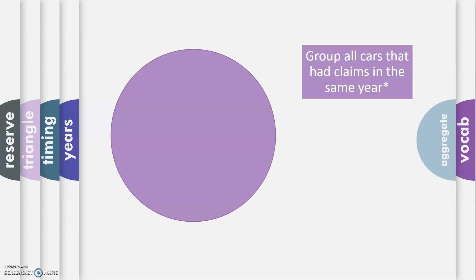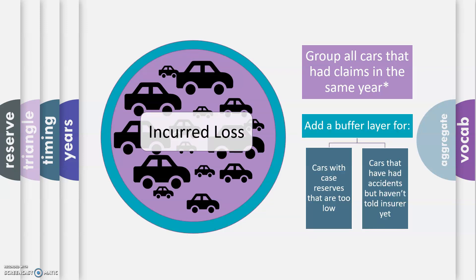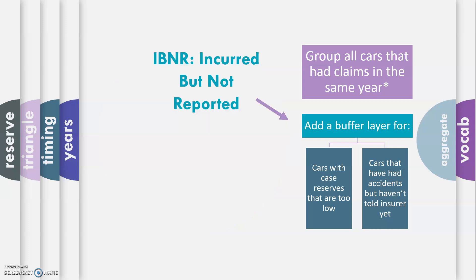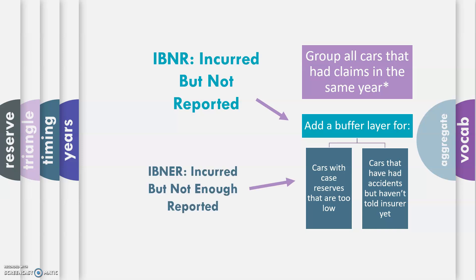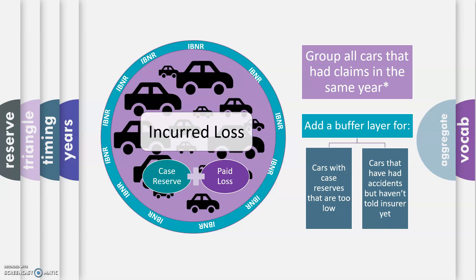We group all cars that had claims in the same year and put all their incurred loss together. Then we add a buffer layer for two reasons: for cars that have case reserves that are too low, and for cars that have had accidents but haven't told their insurance company yet. This buffer layer is called IBNR — incurred but not reported reserves. It's made up of IBNER, incurred but not enough reported, which is when we have money set aside for a claim but it's not enough. And we also have pure IBNR — cars that have had accidents but haven't told us about it yet, so we haven't set any money aside for that claim even though we are responsible for paying it out. Case reserve plus paid loss equals incurred loss; incurred loss plus IBNR equals ultimate loss.